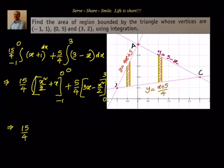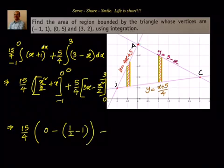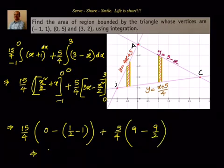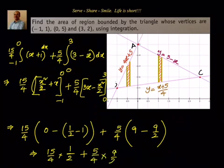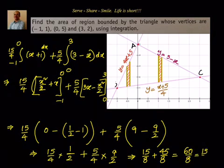Substituting values: (15/4)[0 - (1/2 - 1)] + (5/4)[9 - 9/2]. This gives (15/4)(1/2) + (5/4)(9/2) = 15/8 + 45/8 = 60/8 = 15/2 square units.